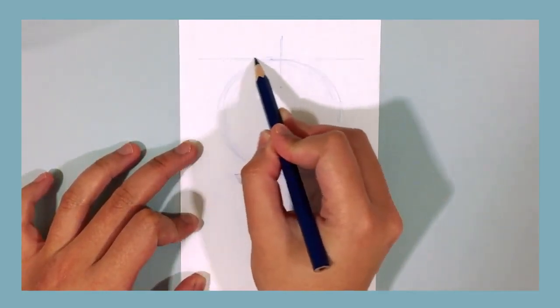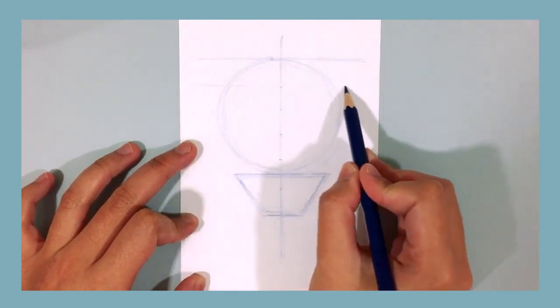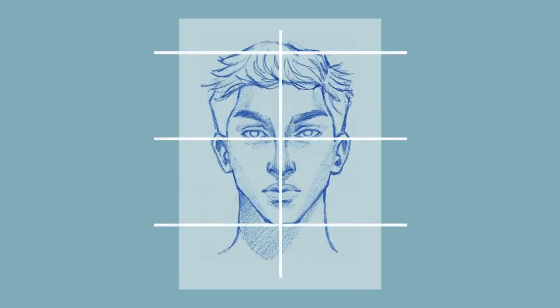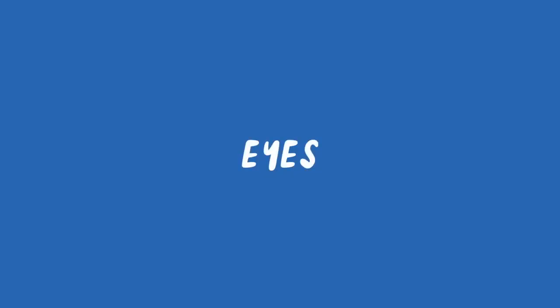After that, draw a horizontal line on every mark that you've made, and this basically creates our guidelines for the face. Each line represents a part of the face. For example, line one is for the top of the head, line two is for the hairline, line three is for the eyebrows, line four is for the eyes and top of the ears, line five is for the nose and bottom of the ears, line six is for the mouth, and lastly, line seven is for the chin.